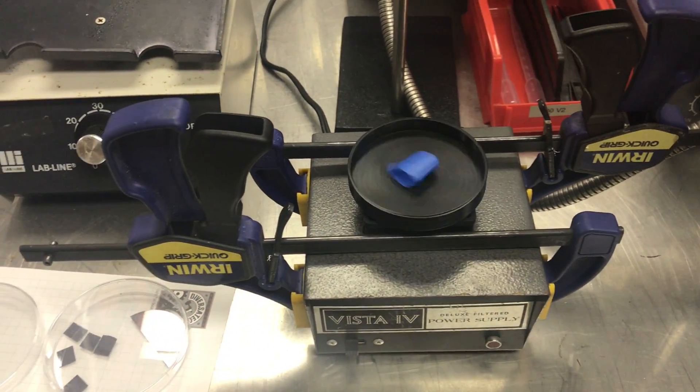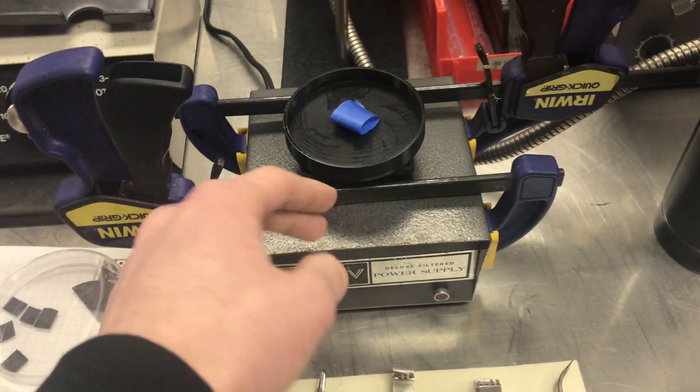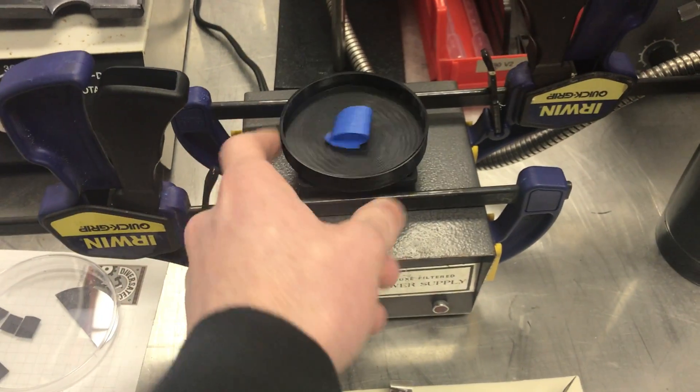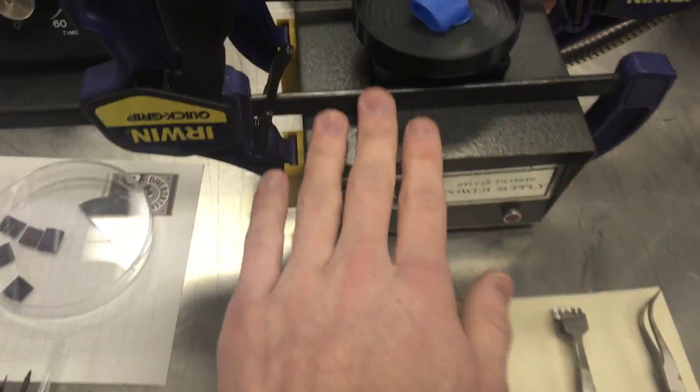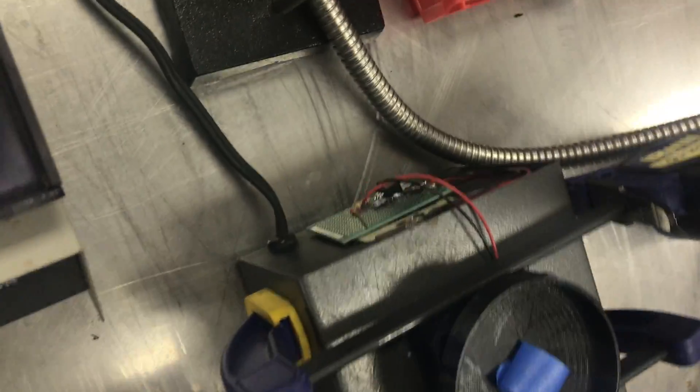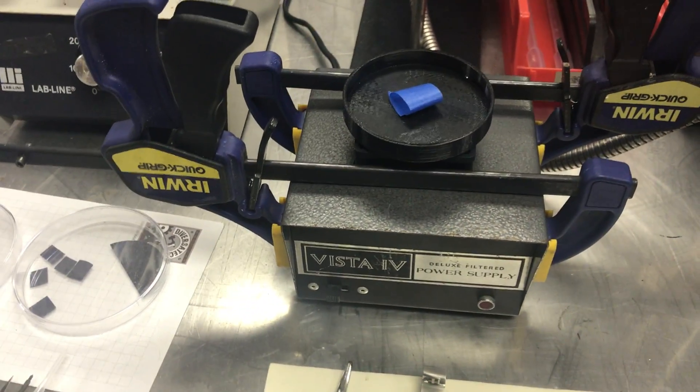This is what I'm using for my spin coating right now. It's far from ideal but it's a muffin fan from a computer. I clipped all the blades off of it and then I 3D printed this dish and then I used this tape to hold my wafer down. And this is a power supply. On the back I have a board I made that gets this very close to 3,500 rpm just so I have it somewhat consistent each time.